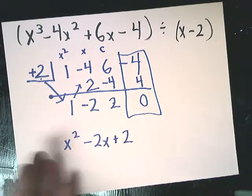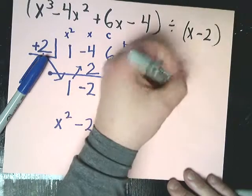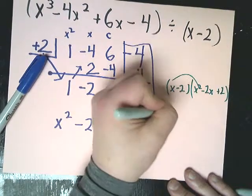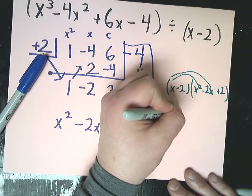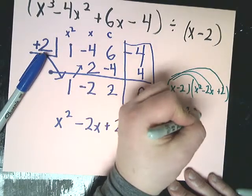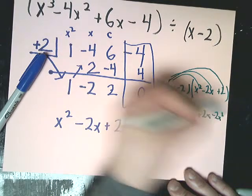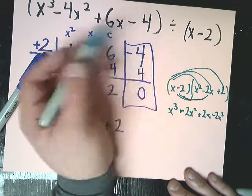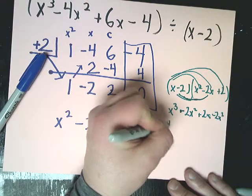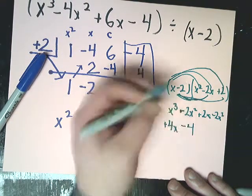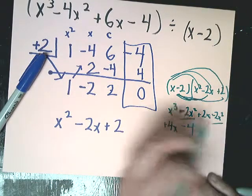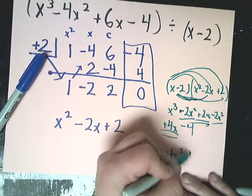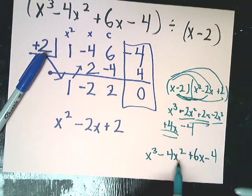So can I test my theory that that's what it is? Sure. All I have to do is take x minus 2 and multiply x squared minus 2x plus 2. These are like terms. So x to the third minus 4x squared plus 6x minus 4. So it gives me the answer that it started out with.